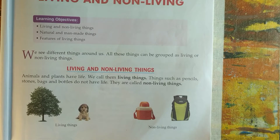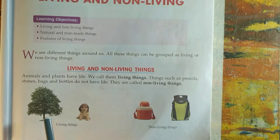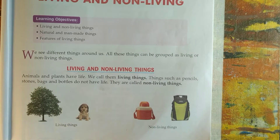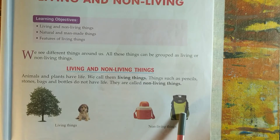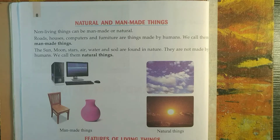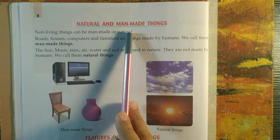Things that have life and show any kind of activity are called living things. For example, plants and animals. Things such as your book, bottle, and bag do not have life and are called non-living things. Non-living things can be classified into two groups: natural things and man-made things.